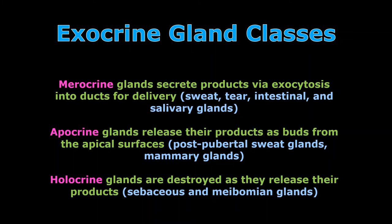Styles of exocrine glands: merocrine, apocrine, and holocrine. Merocrine glands secrete a product via exocytosis, straight into a duct for delivery. True sweat glands — those sweat glands you're born with that cool the body — tear glands, intestinal glands, and salivary glands are all examples of merocrine glands. The cell remains intact as it secretes that product straight into a duct via exocytosis.